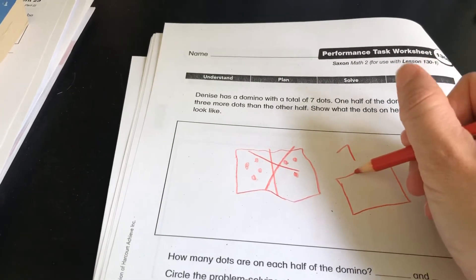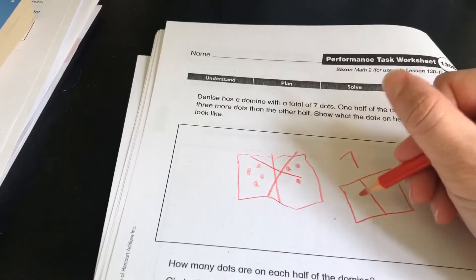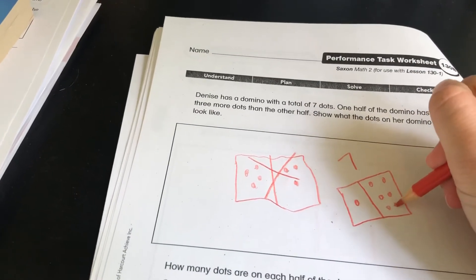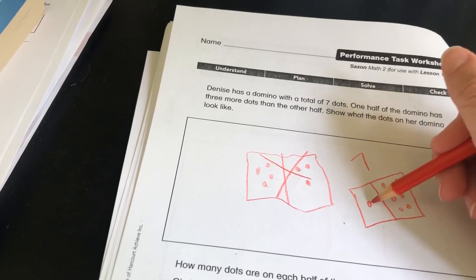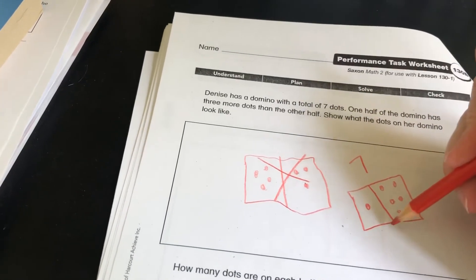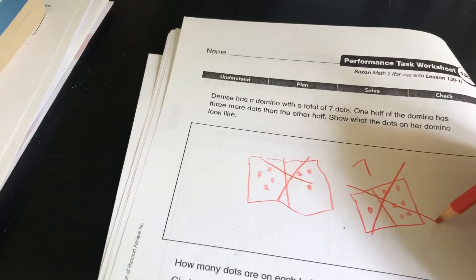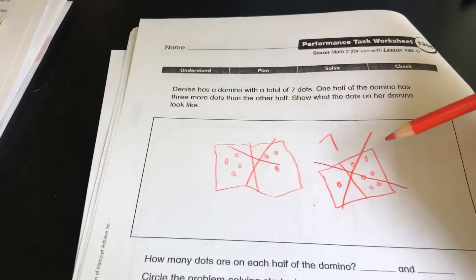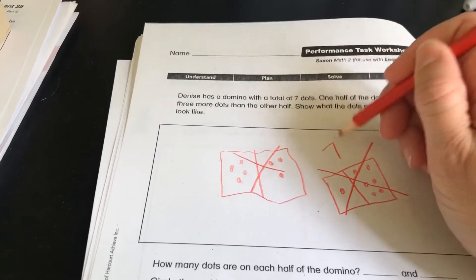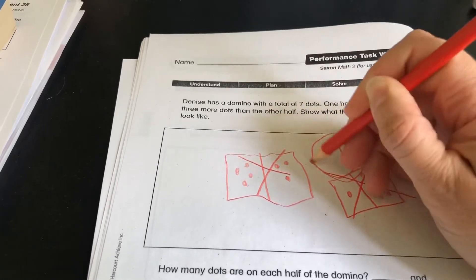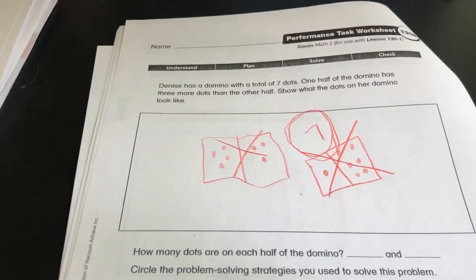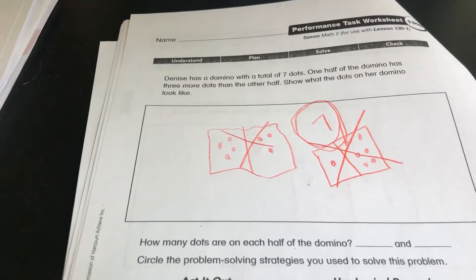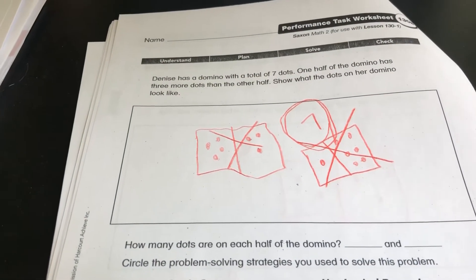Now, if I'm remembering my dominoes correctly, I could have one and six, right? That adds up to seven. But this side has five more dots than the other side. So that's not going to work. So there's a couple more ways that you could add it up to get to seven. So I want you to try and find those on your own. So I showed you two wrong ways to do it. You need to go ahead and find the right way.